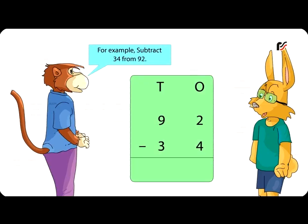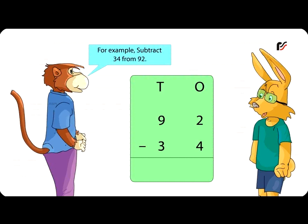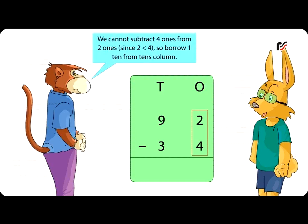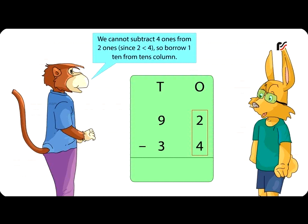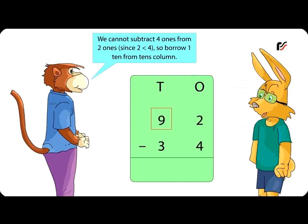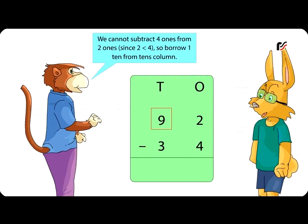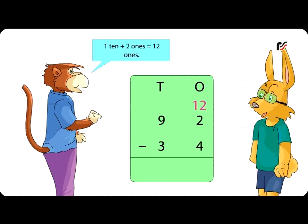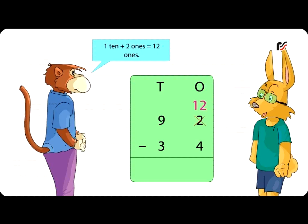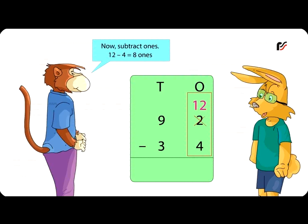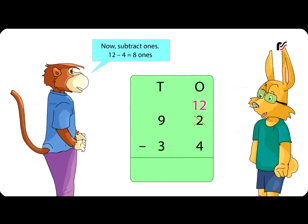For example, subtract 34 from 92. Write the bigger number first. First, subtract the ones. We cannot subtract four ones from two ones. Since two is smaller than four, borrow one ten from the tens column. One ten plus two ones is equal to twelve ones. Now subtract ones: twelve minus four is equal to eight ones. Write eight under the ones column.